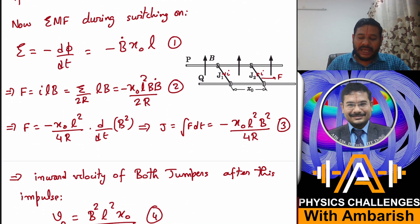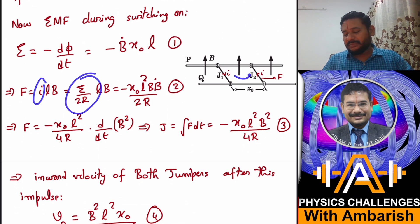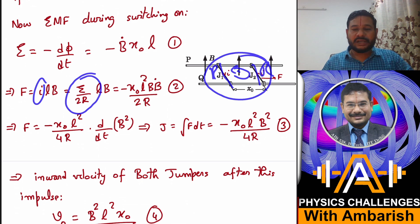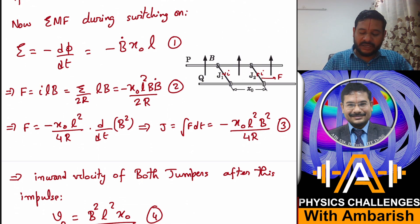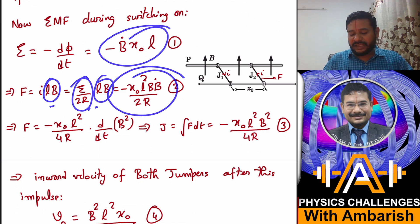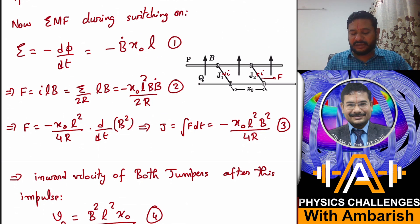What will be the force then? Force is I·l·B. Now I is EMF divided by resistance, so EMF in the loop divided by resistance. This is R resistance, this is also R, so total resistance of the loop is 2R. So E/(2R) is the current and lB comes as it is, and then I substitute for E. So this is the force that I get.